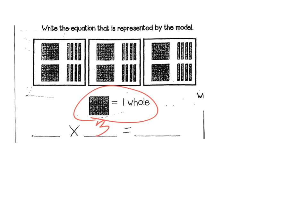There are three groups here with the same picture, so I'm going to circle just one of the pictures. It looks like I'm seeing two wholes — I can label them, there's one, there's two. Then since those are my wholes, these longs are going to be my tenths, and I've got one, two, three, four, five, six, seven, eight — there are eight of those.